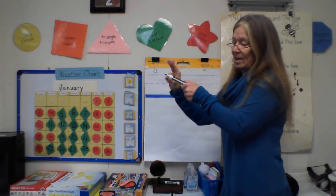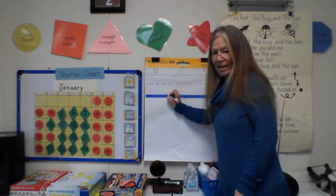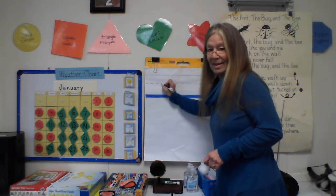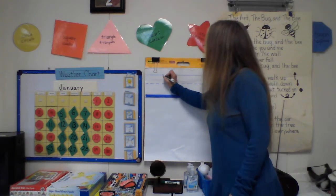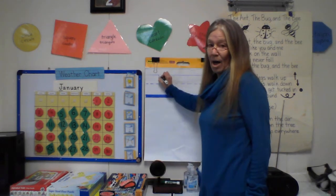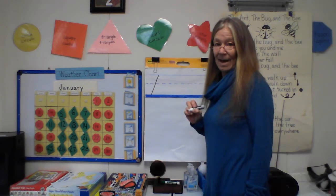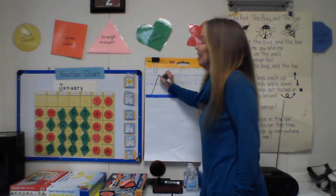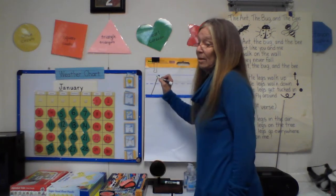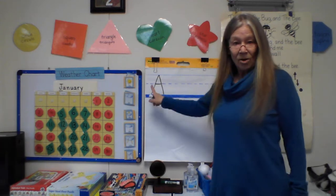Pinchy grip. Like that. Now, is this the top? No, it's the bottom. Is this the top? No, that's the middle. Is this the top? It's the top. So I'm going to start my letter at the top and bring it down to the bottom. And I'm going to go back up to the top and bring it down to the bottom. And then I'm going to go to the middle and make my line across. And that's our letter A.